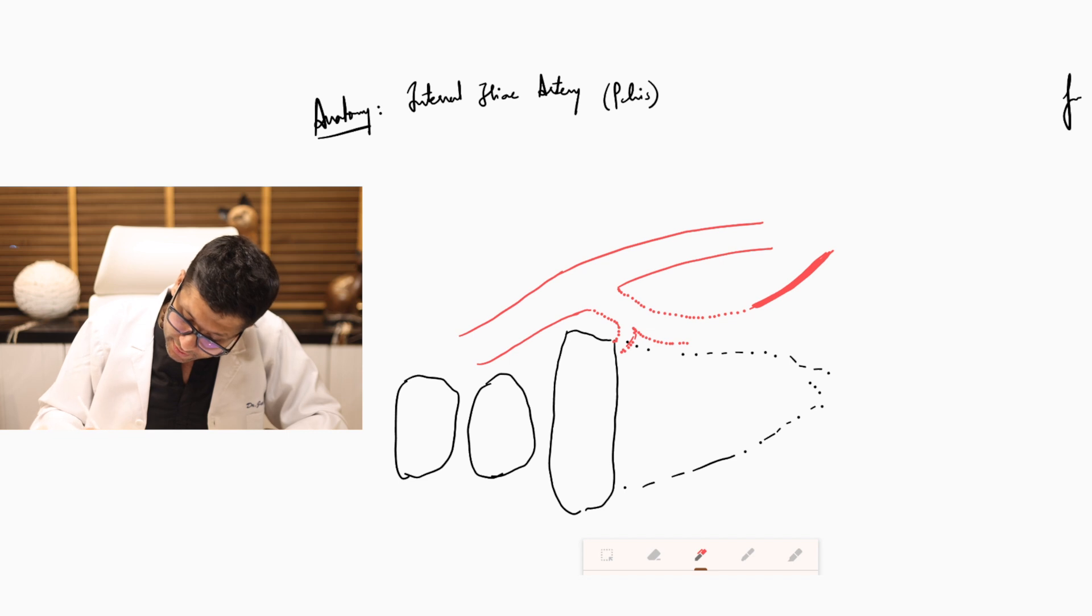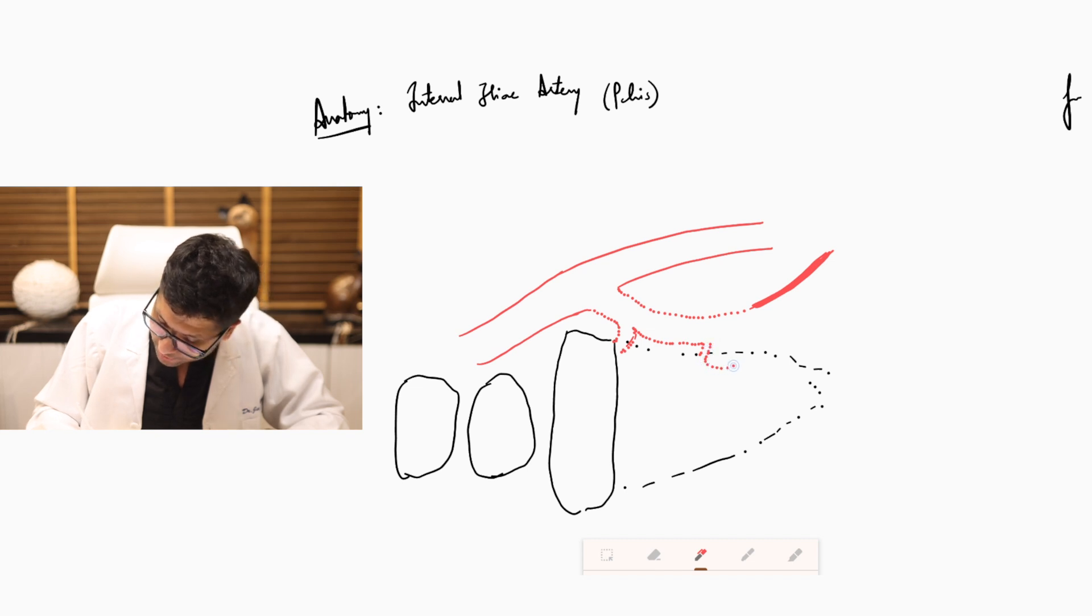This anterior division is then going to give multiple branches. Some important branches which we are going to draw and label are the pudendal branch, which exits and goes downwards.